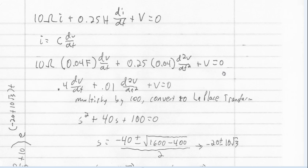That's very convenient because ultimately V is what I'm trying to solve for. So if I go ahead and multiply these components together, take that, multiply by 100, and convert it using a Laplace transform, I get S squared plus 40S plus 100 equals zero.